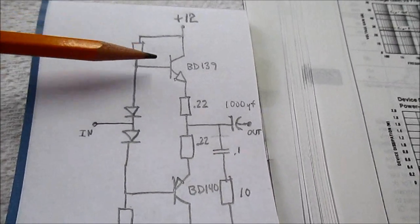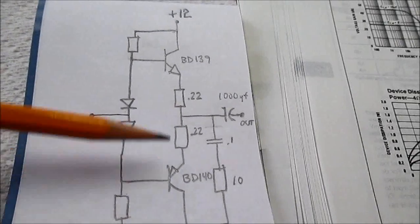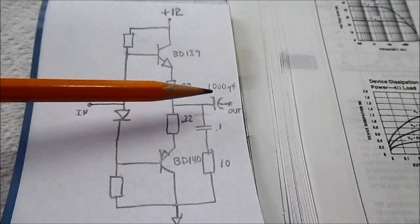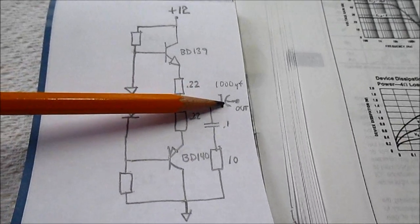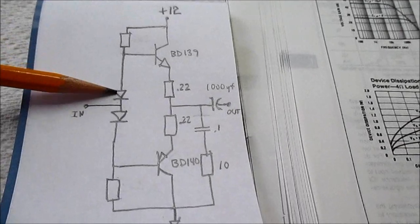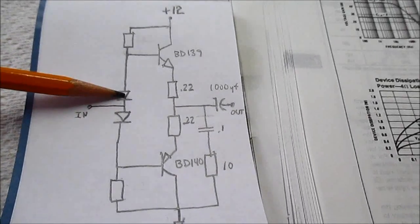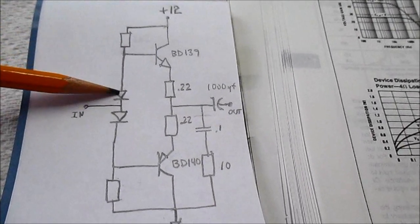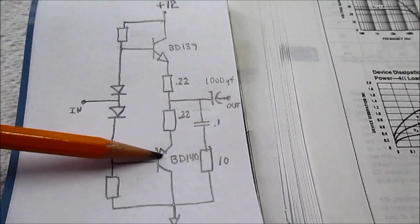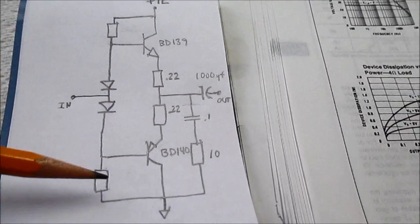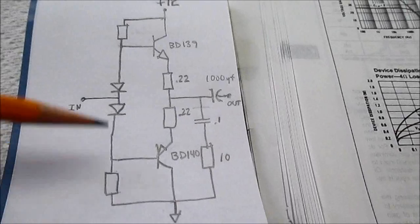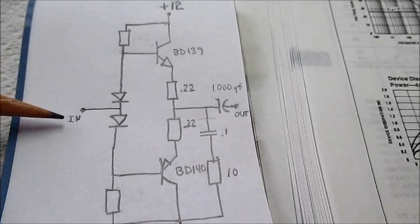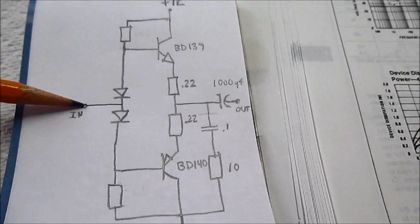A couple transistors, complimentary pair of transistors. It's a single supply, so we have an output coupling capacitor. Just use a couple biasing diodes. We got the base-to-emitter diode here and the one down here for the PNP. We'll determine what resistors we'll use here in the biasing circuit. And of course, we'll just feed the output of the LM386 right in here.